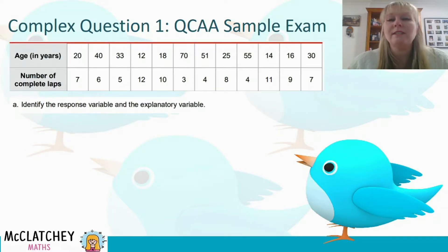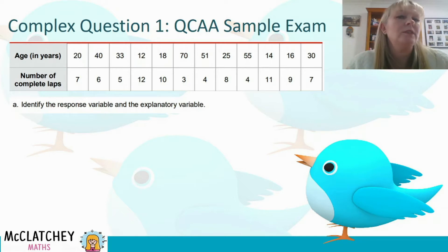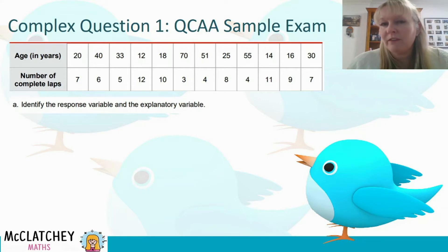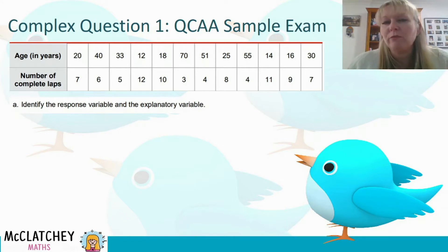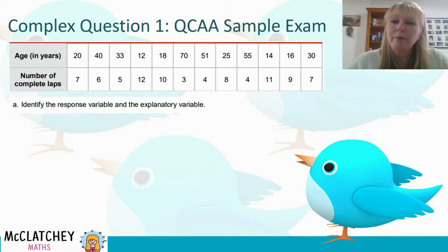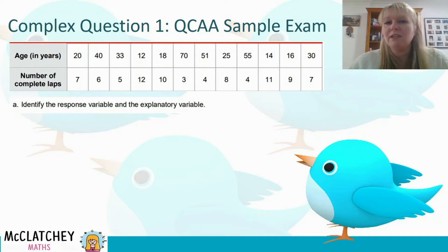Firstly, we're asked to identify the response variable and the explanatory variable. You need to think about it because you won't always be given the explanatory variable first and then the response variable second. You're going to have to think about what makes sense — what would you plot on the x-axis and what would you plot on the y? Having a look at this particular question, if I think about a real life situation and I looked at a 12 year old or a 14 year old, I'm pretty sure that they could run a lot further than a 70 year old.